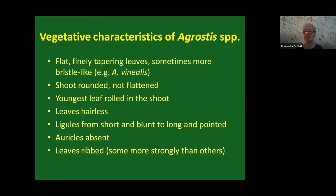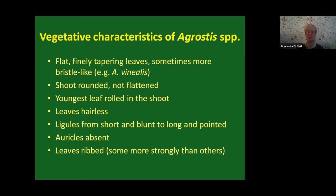It can be quite hard to dissect tiny Agrostis flowers, so you might rely on vegetative characters quite a bit. The leaves are flat and finely tapering — not parallel-sided. The shoots are rounded, not flattened. The youngest leaf is rolled in the shoot and the leaves are hairless. Ligules vary from short and blunt in some species to long and pointed in others. There are no auricles. The leaves are ribbed — not massive ribs, but if you fold the leaf and hold it to the light, you can see little ridges along the length.